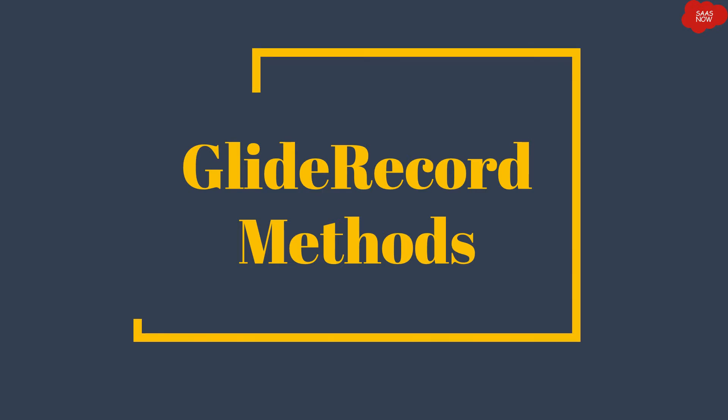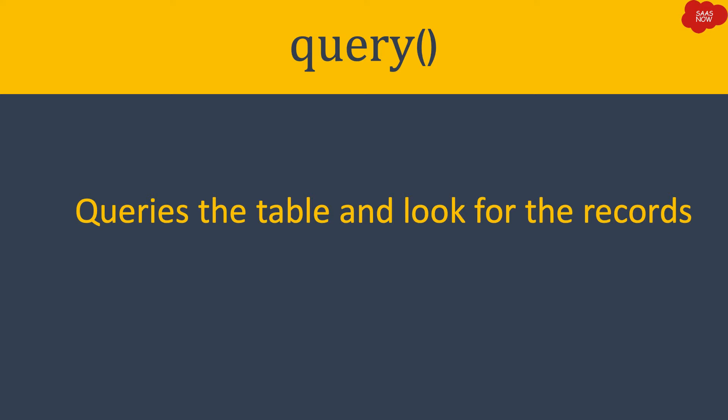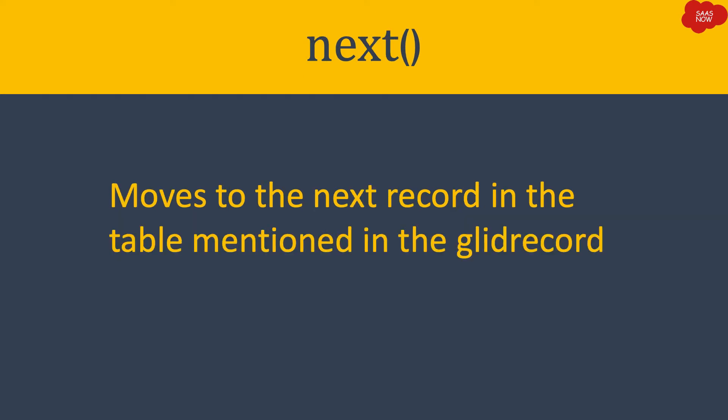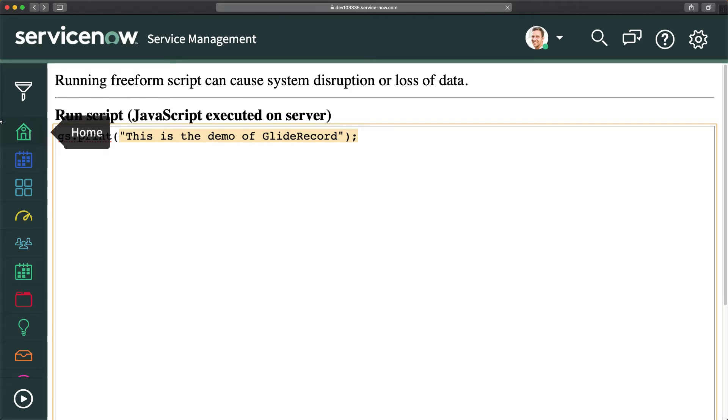Now let's look at different GlideRecord methods. The first method is query, which queries the table mentioned in the GlideRecord object and looks for records. The next method is next, which moves to the next record in the table. If you're doing a loop, it will keep moving to the next record — for example, if a query returns 10 records, it will traverse each one.